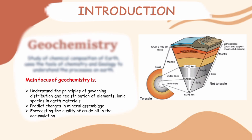The main focus of geochemistry is to understand the principles governing the distribution and redistribution of elements and ionic species in earth materials, predict changes in mineral assemblage, and forecast the quality of crude oil in generation and accumulation in the earth's crust. Geochemistry mainly focuses on chemical compositions and formations of the earth's crust to understand the geological and biological processes occurring within it.